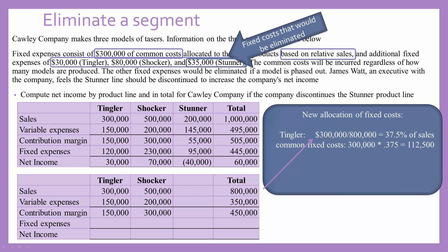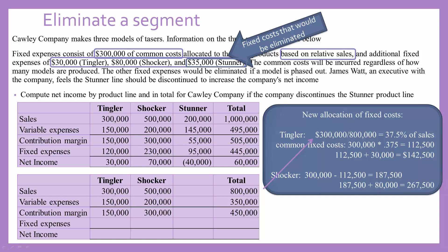Remember there are certain fixed costs that belong just to the Tingler line and just to the Shocker line. We need to add on Tingler's $30,000 of fixed costs to determine that Tingler's total fixed costs would be $142,500. For the Shocker line, since total common costs were $300,000 and $112,500 is allocated to Tingler, the rest goes to Shocker. Shocker also has its own specific fixed costs of $80,000, so Shocker's total fixed costs are $267,500.